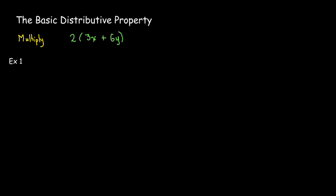In this short video, we're going to talk about the distributive property, which is really what we might call removing parentheses. So let's start with a very simple example, and we're just going to multiply 2 times the group 3x plus 6y.